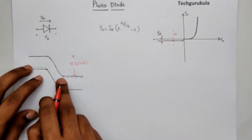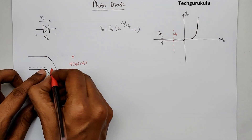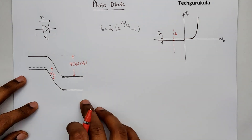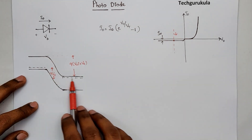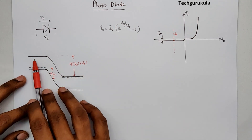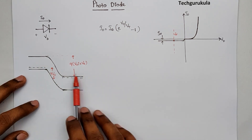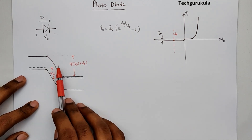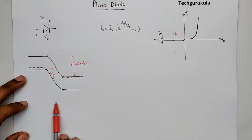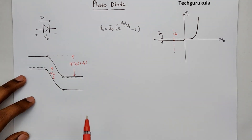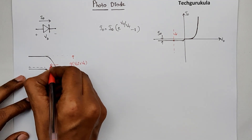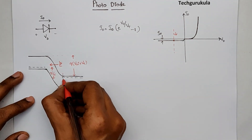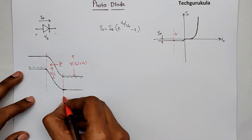The Fermi energy levels have split and the difference between them would be Q times Vr. In this energy band diagram, the slope is 0 in the neutral regions, which means the electric fields are 0 there. In the depletion region the slope is negative, which means the electric field is directed in the negative x direction. So we have an electric field present in the depletion region where the energy band is bent.